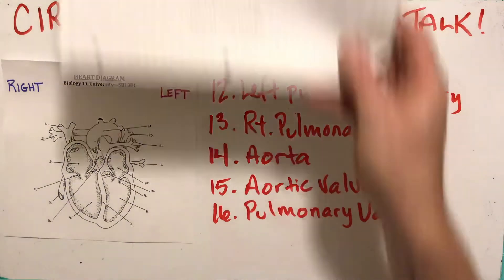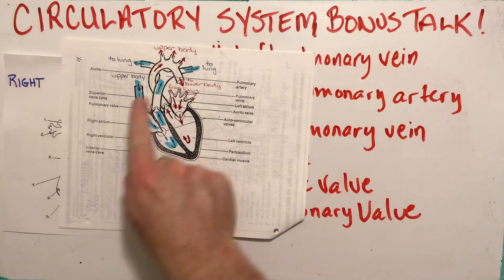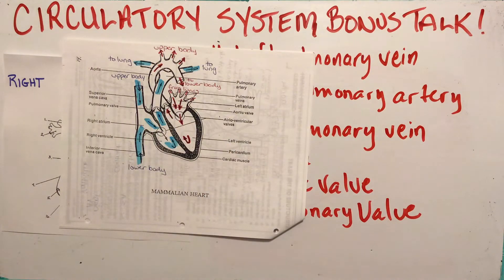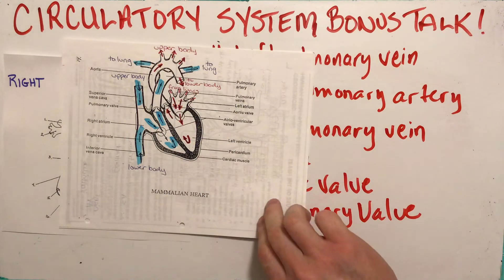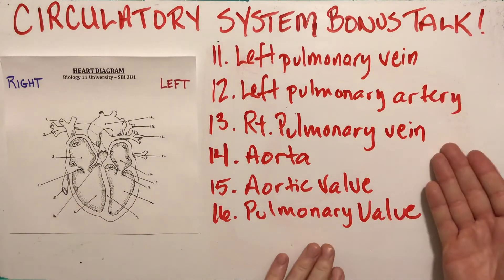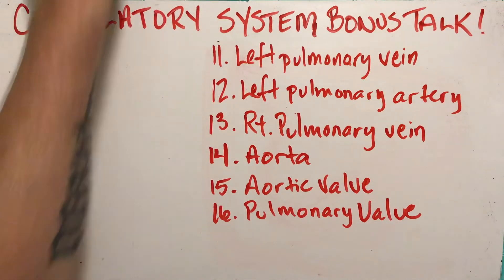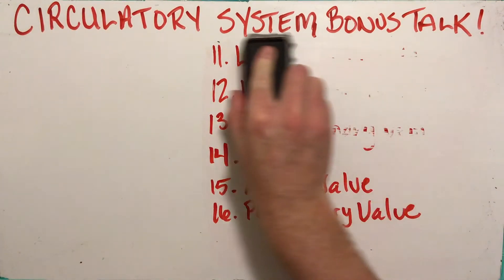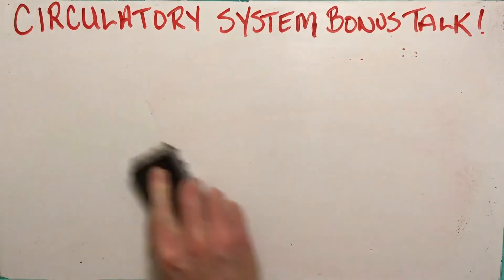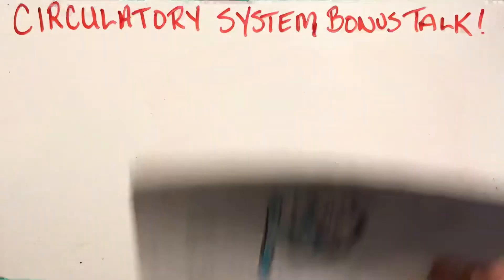For blood flow, use this diagram — pause the video and use your blue and red highlighter if you need to. Pause now if you need to get these labels onto your diagram. Then I'm going to fill out the other handout that I posted to Edsby.